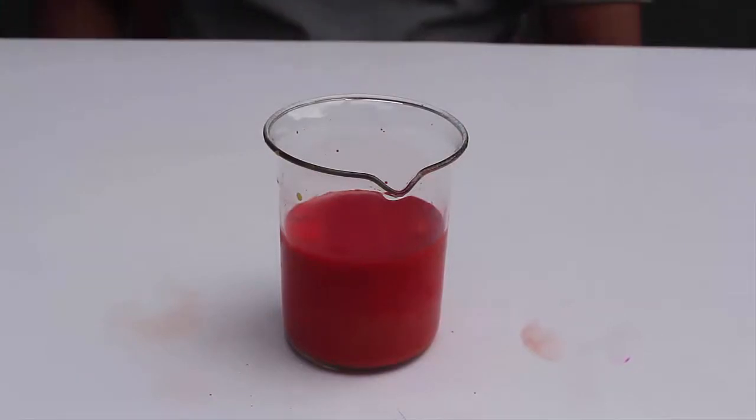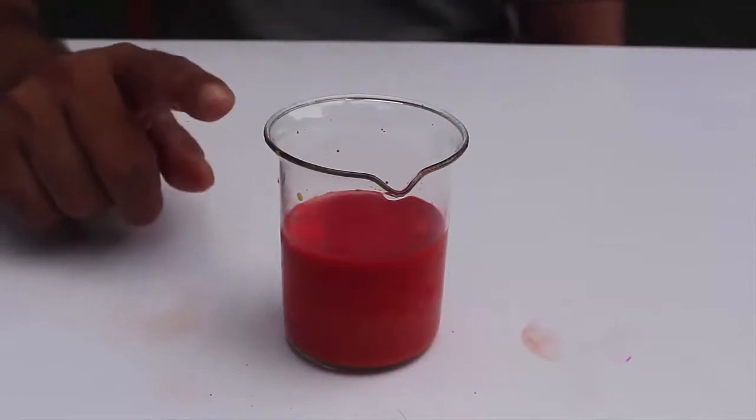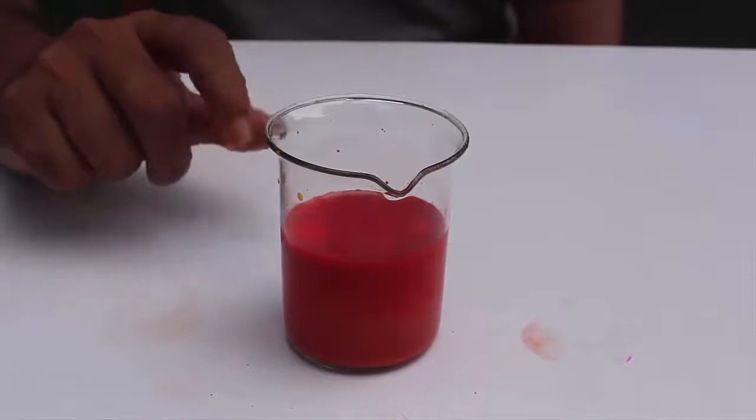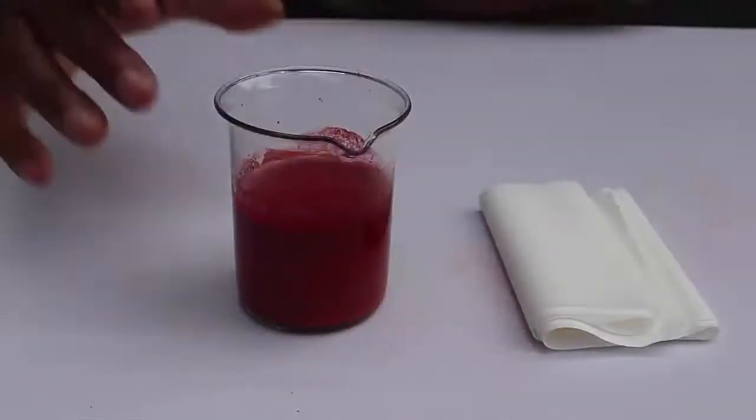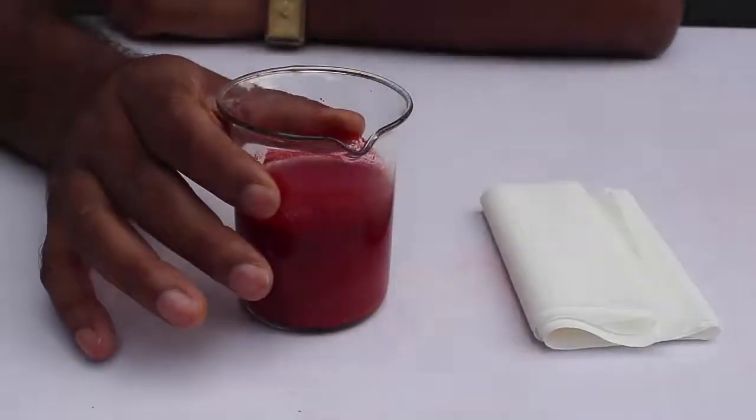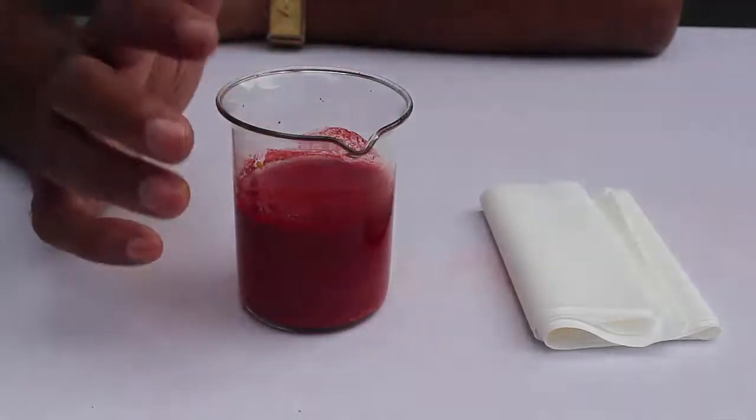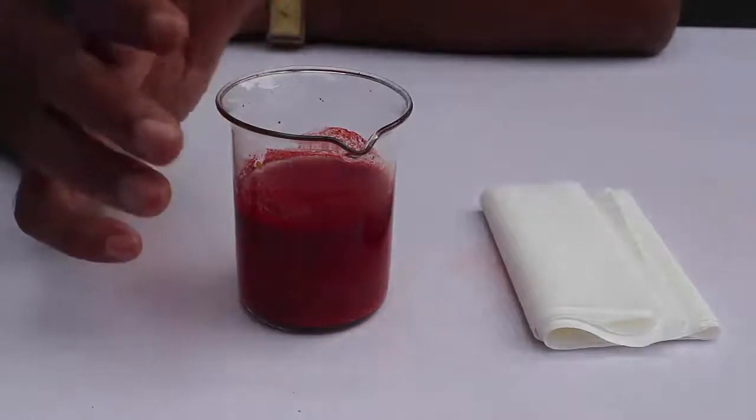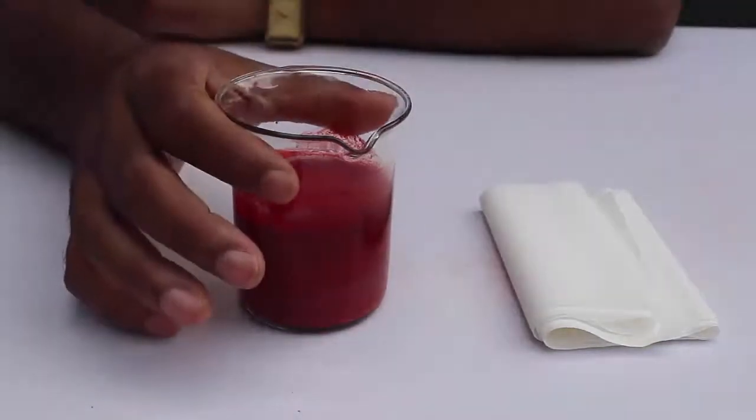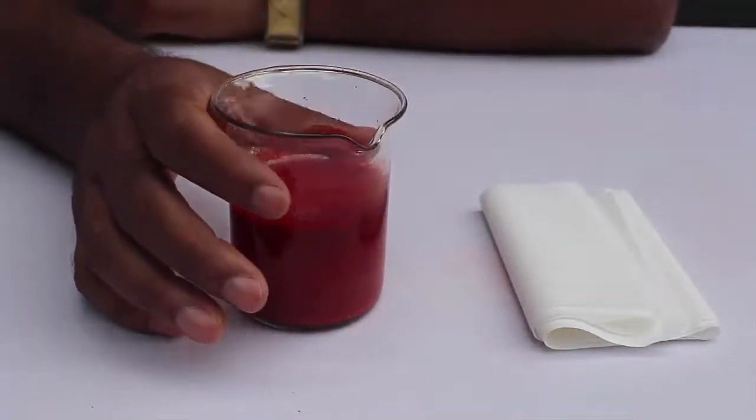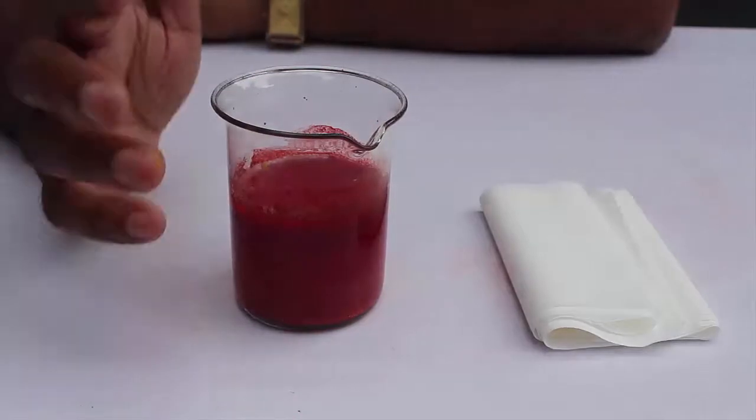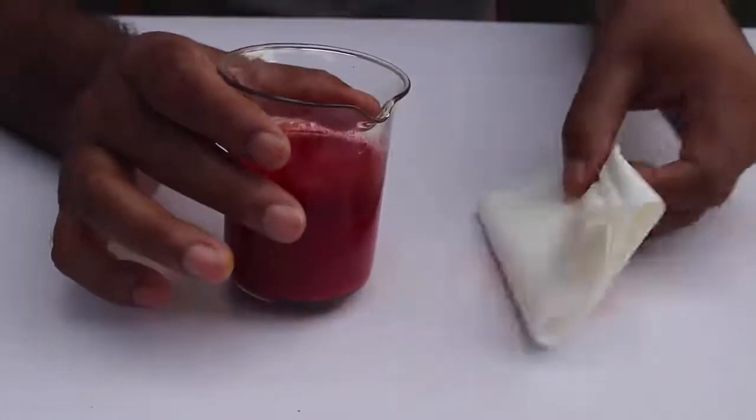Now to get the commercial dye, we have to filter the solution. But what you can do is place a drop of the solution on a piece of filter paper, and this would give you a good idea as to how this dye colors fabric and clothes.